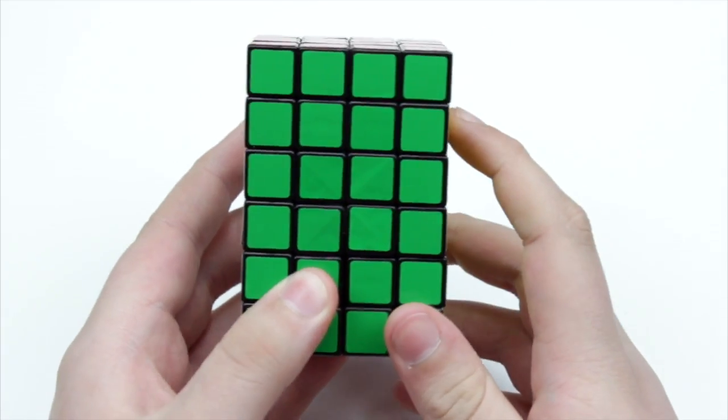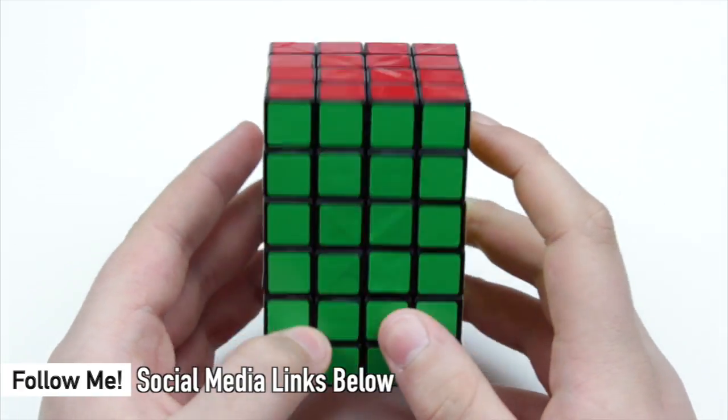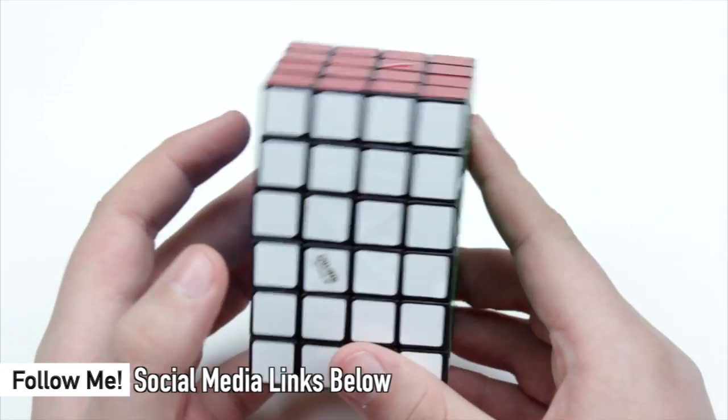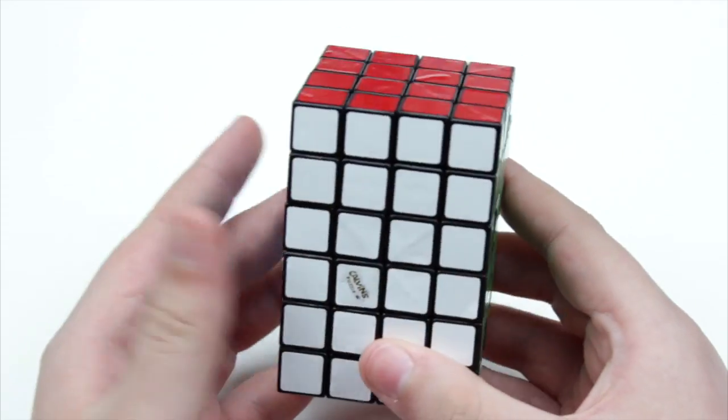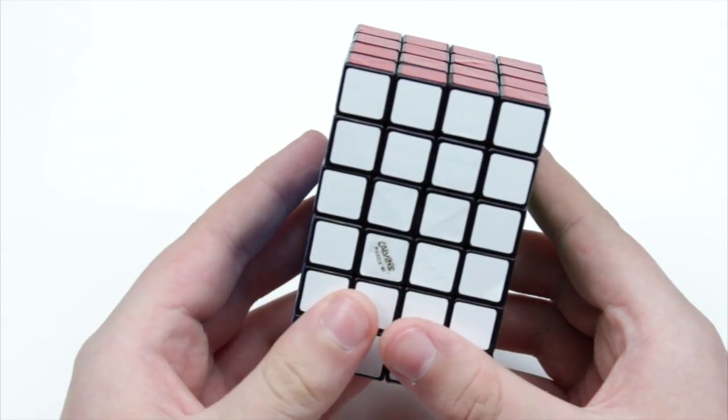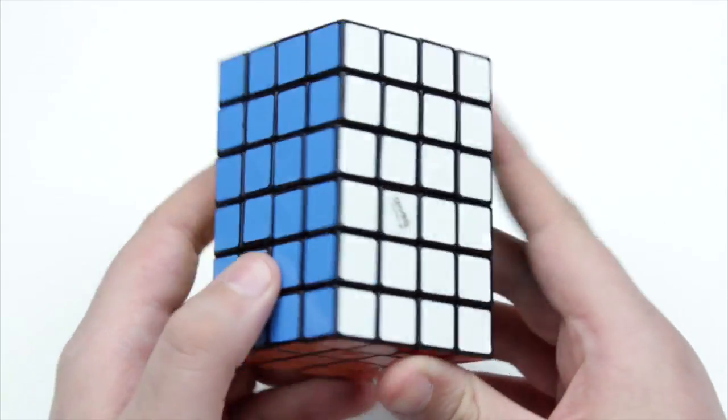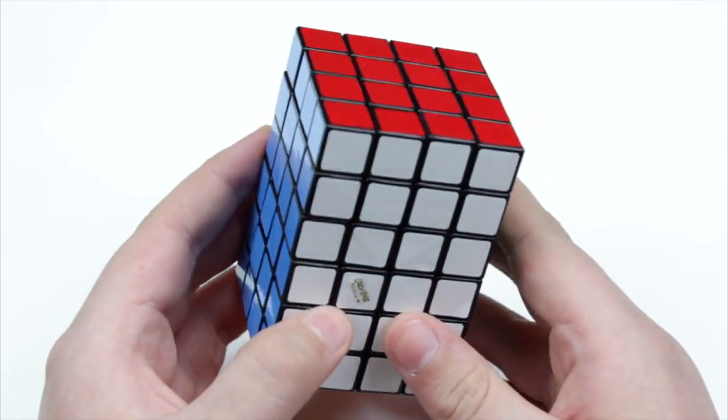So the 4x4x6 is basically the next step up from the 4x4x5. The way we're going to solve this is take all the things that we learned with the 4x4x5 and expand on it with the things that we learned in the 3x3x5. Now, since this is a shape-shifting puzzle,